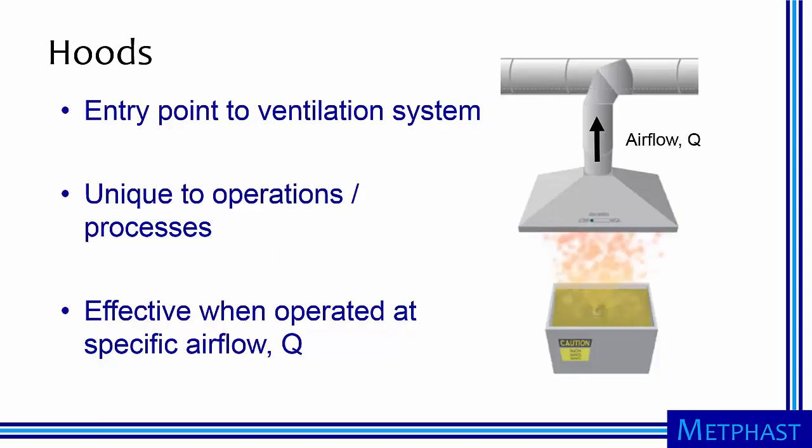Hoods are the entry point to the ventilation system. They have unique designs to serve a given operation or process. For example, we show a canopy hood used to ventilate hot vapor from a dip tank. Hoods are effective when operated at a specific air flow rate, commonly abbreviated with the symbol Q, and measured in the duct just downstream of the hood.